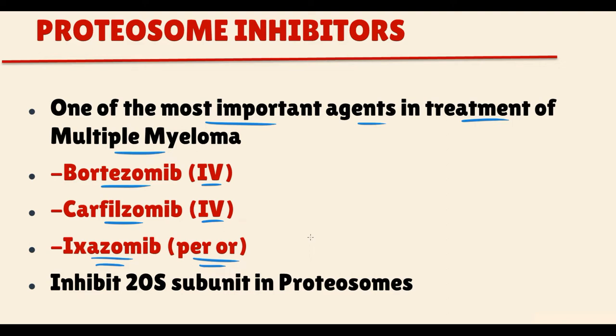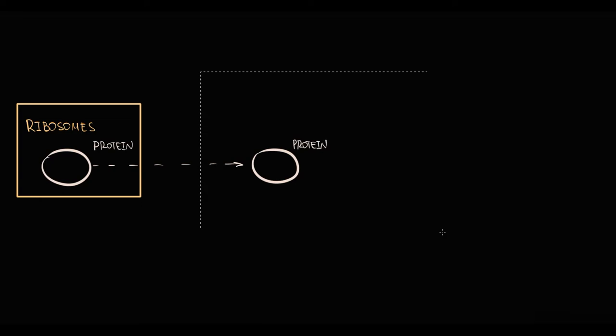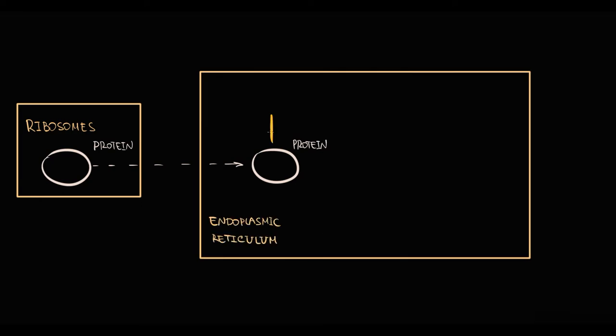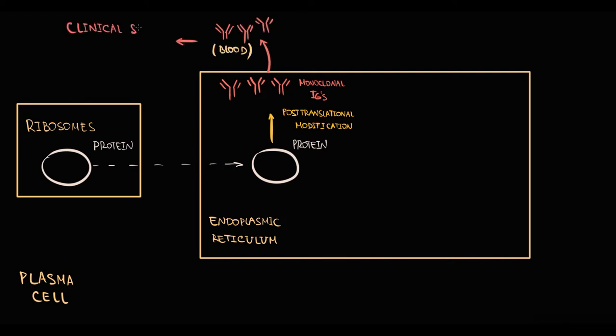To explain the mechanism of proteosome inhibitors, we have to know how protein synthesis occurs. Initially ribosomes produce proteins. Then to modify proteins to make them functionally capable, they have to undergo post-translational modifications in endoplasmic reticulum. In case of plasma cells, they produce immunoglobulins in very high quantity, and then plasma cells secrete that huge amount of immunoglobulins into the blood that cause specific symptoms of multiple myeloma.